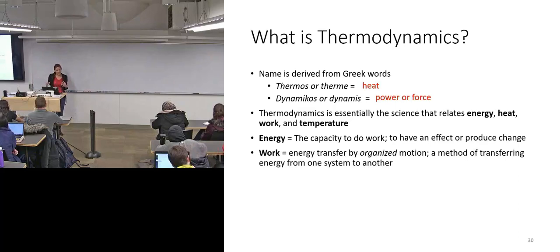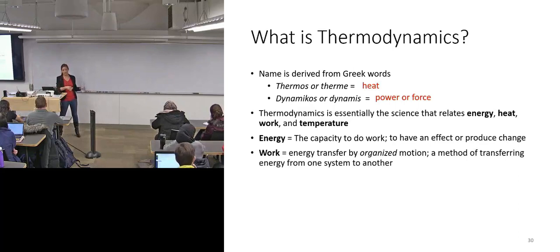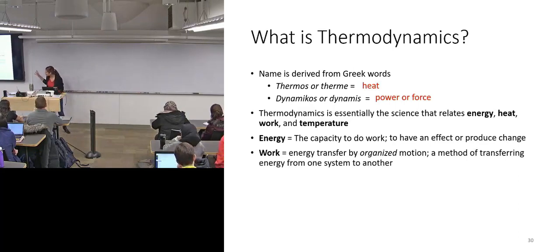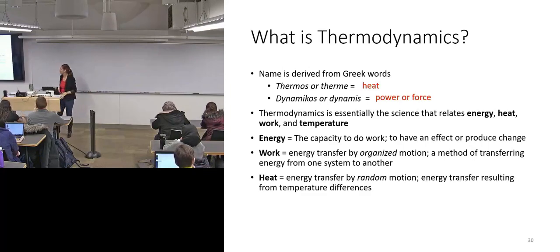Okay, work. Work is energy transferred by organized motion. It's a method of transferring energy from one system to another system. Organized here is in italicized font. So if we're now talking about, what would be the opposite of organized motion? Disorder. Energy transfer by random motion. So energy transfer by random particle motion. What do you think that might be? Heat. I mean, there was only a couple words up there to choose from. So, beautiful. Energy transfer by random motion. Energy transfer that results from a temperature difference is the definition of heat.